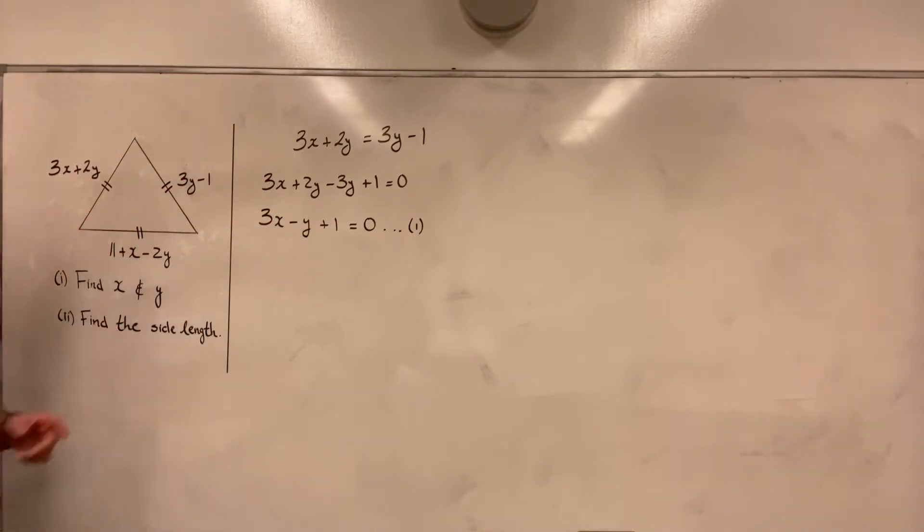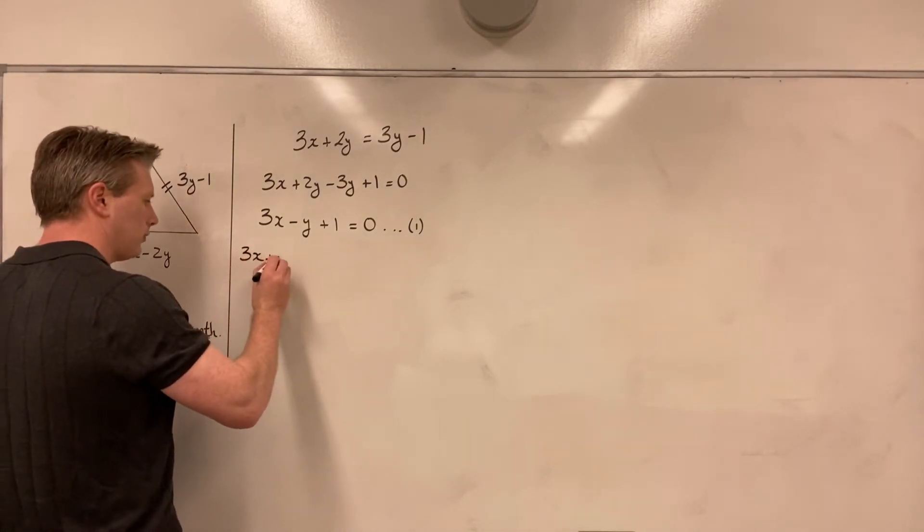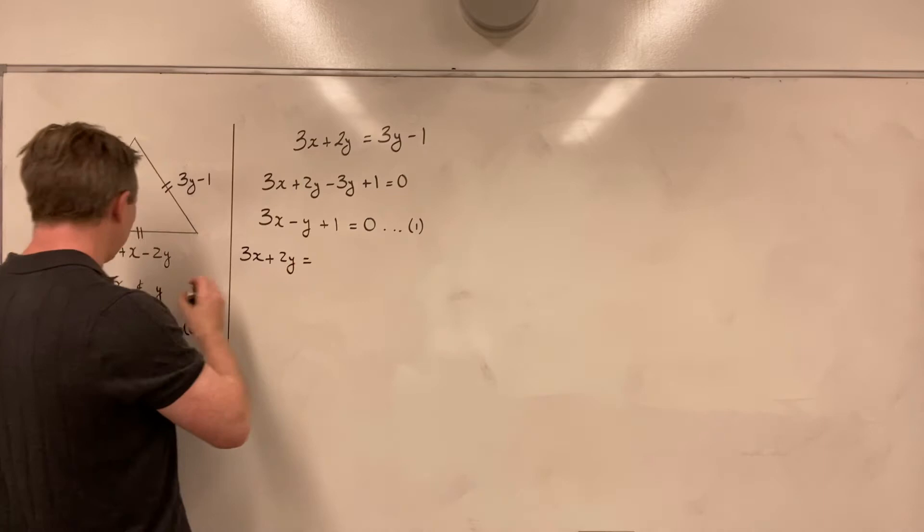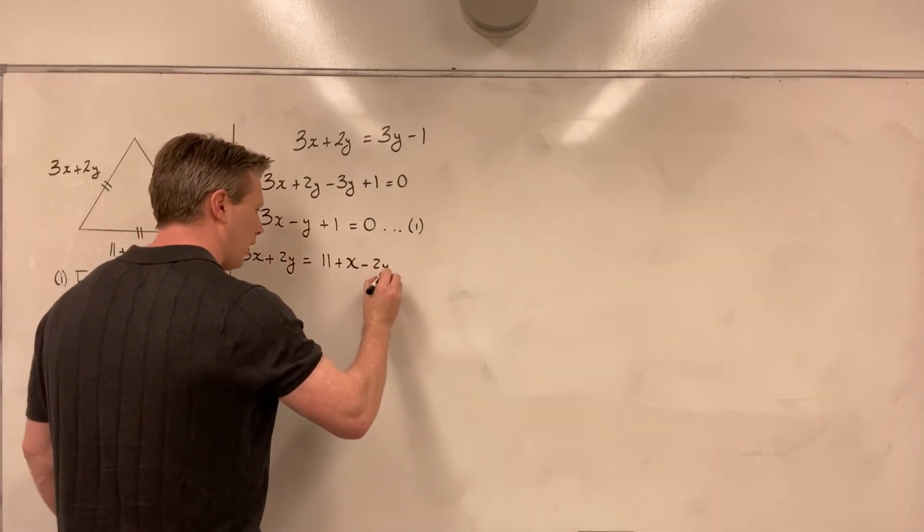I have one equation with 2 unknowns. So I need to find a second equation. What I will do is now equate this side and this side. I could just as easily choose these two sides, but I'll choose these two. So I have that 3x plus 2y must also be equal to 11 plus x minus 2y. That is, 3x plus 2y must be equal to 11 plus x minus 2y.